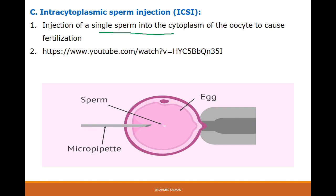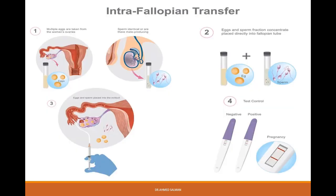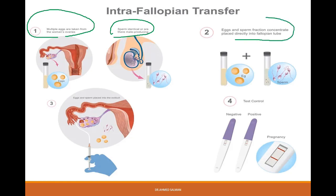For the intrafallopian gamete transfer or GIFT: we collect the ovum from the female and the sperm from the male, concentrate both outside the body, then inject them inside the fallopian tube to give a chance for fertilization to happen, then perform a pregnancy test to know if pregnancy occurred — negative or positive.